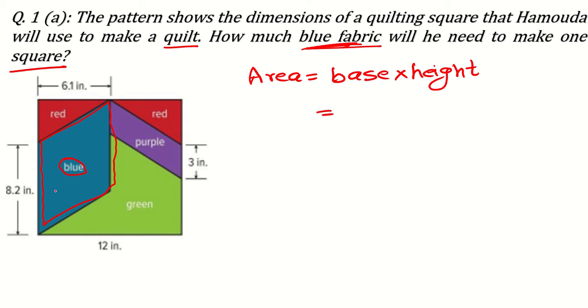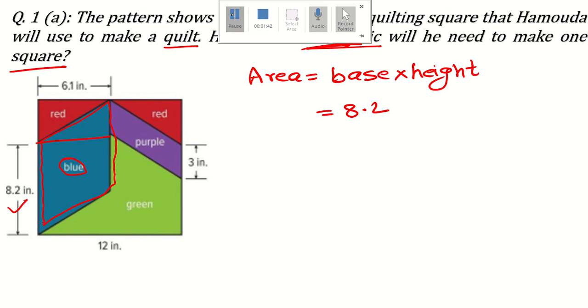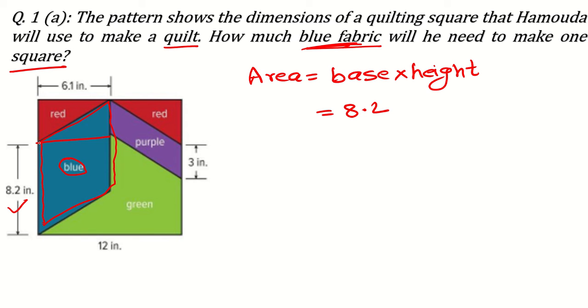Now you see, what is the base? Base you can take as 8.2. This is the base, here it is given. And what is the height? Height means this line. Where is this line given in this question? You see this side is same, equal to this side, yes or no? So height will be 6.1.